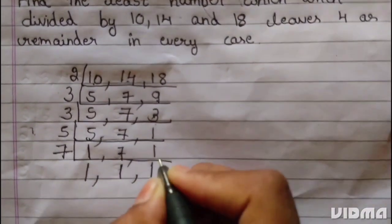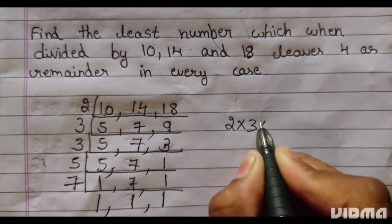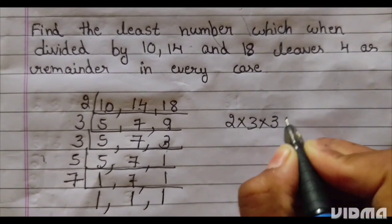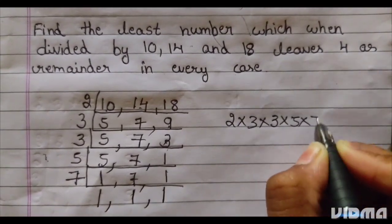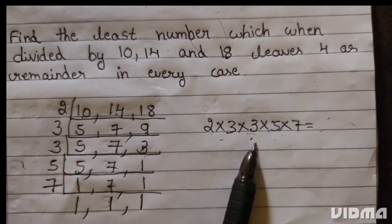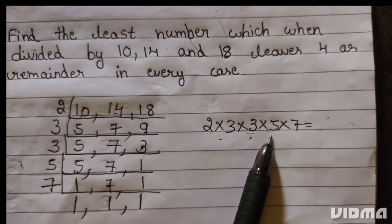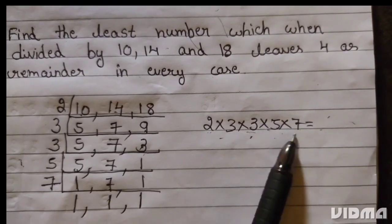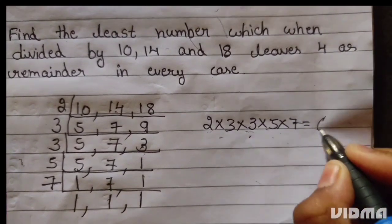2 multiply 3 multiply 3 multiply 5 multiply 7. 2 times 3 is 6, 6 times 3 is 18, 18 times 5 is 90, 90 times 7 is 630.